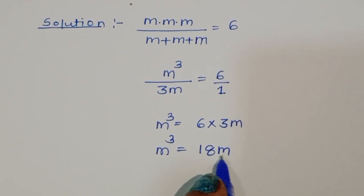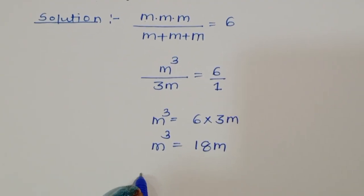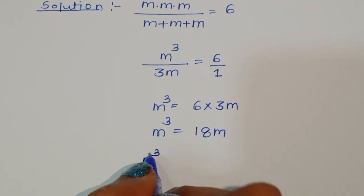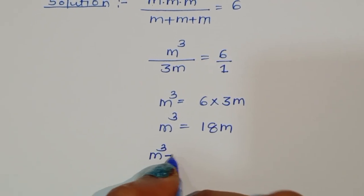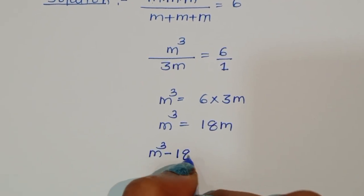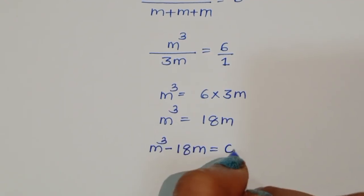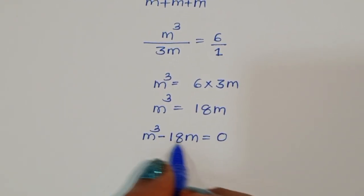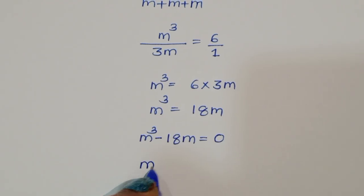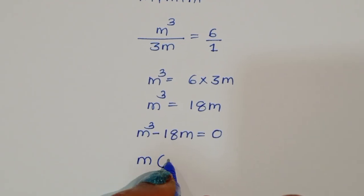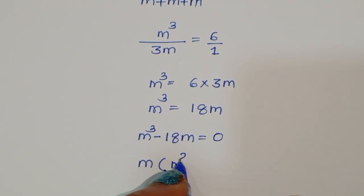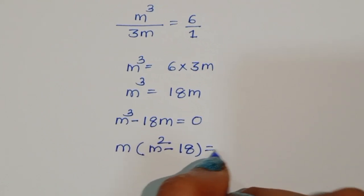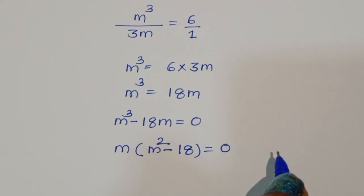We can rearrange this equation: m cubed minus 18m is equal to 0. Now we can take m as common, so we get m times (m squared minus 18) is equal to 0.